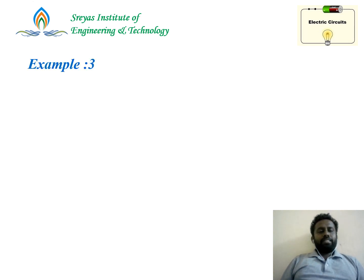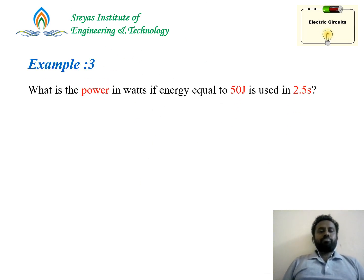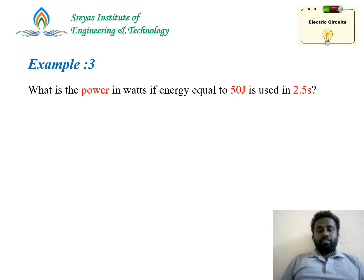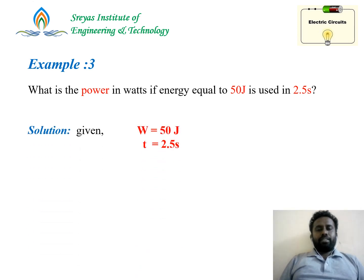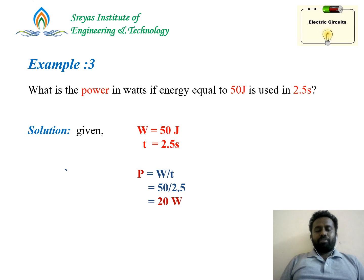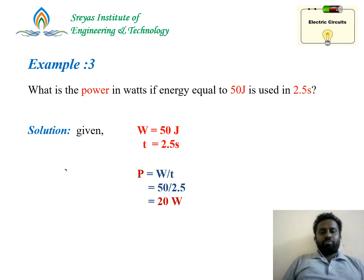Let's take example 3 on power. What is the power in watts if energy equals 50 joules is used in 2.5 seconds? Work done is 50 joules, time is 2.5 seconds. Power = W/t = 50/2.5 = 20 watts.